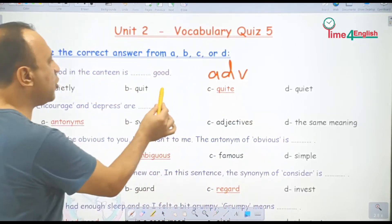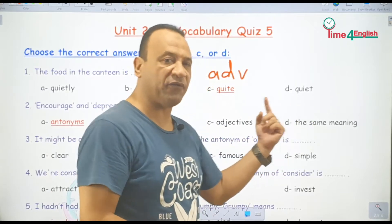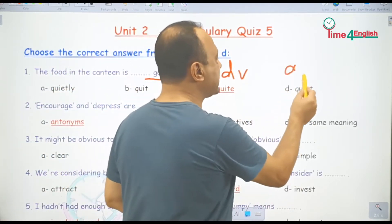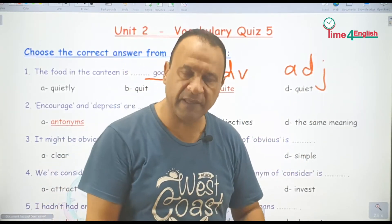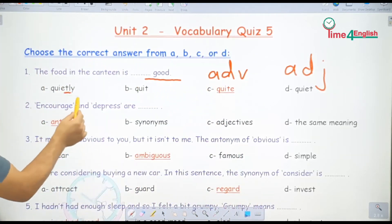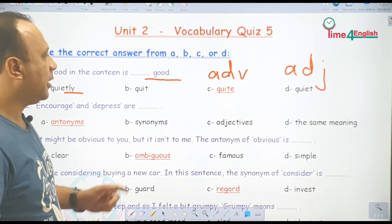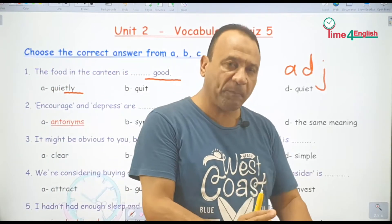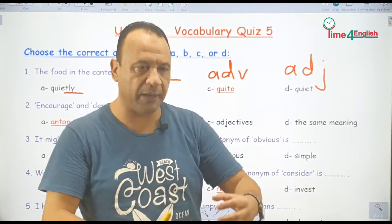ممكن تستخدموا quite قبل الـ adjective good. بينما quiet — شايف الفرق في الـ spelling — quiet is an adjective، صفة معنى هادئ. أخذنا منها الـ adverb quietly بهدوء. أما quit — the verb quit معنى stop doing something.